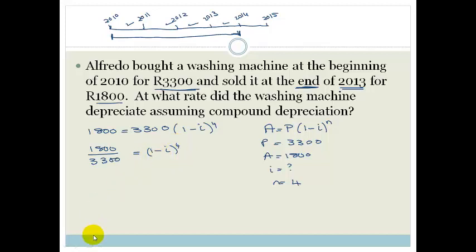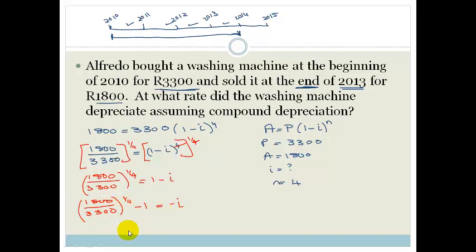Now to get rid of the 4, what did we need to do? Remember we've done this before. We need to take both sides to the power of a quarter. And then if we also take this to the power of a quarter, because what you do to one side, we do to the other side. So then this cancels with that. And then we have 1,800 all over 3,300 to the power of a quarter is equal to 1 minus I.